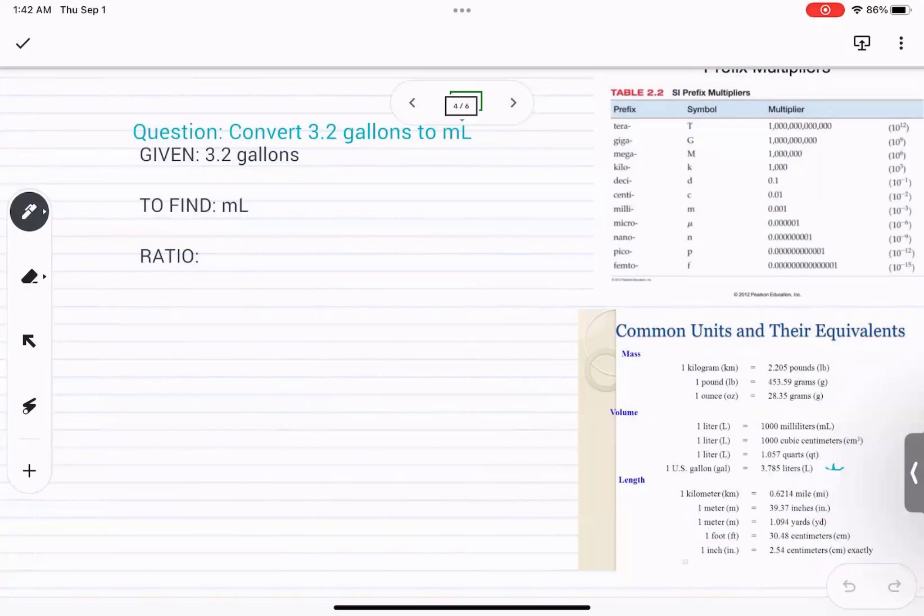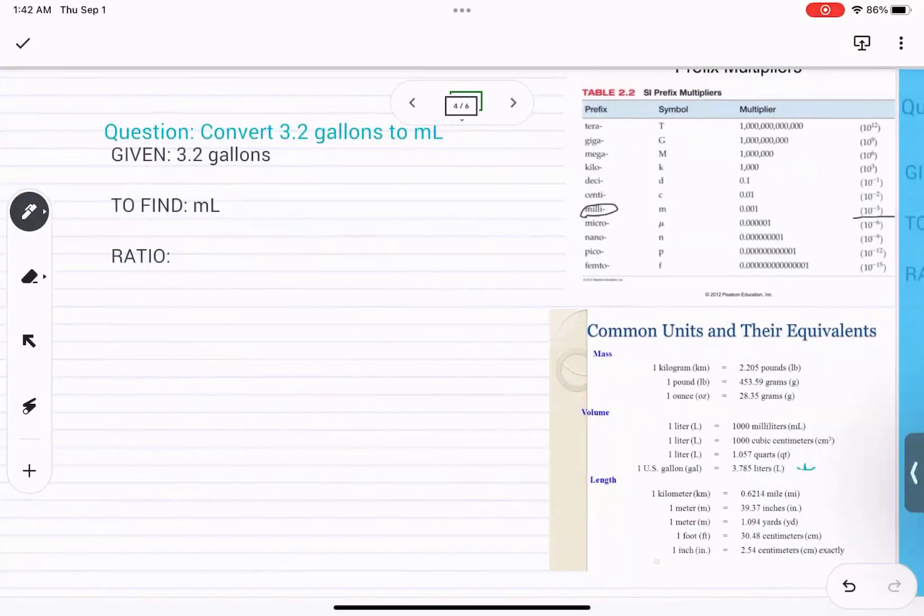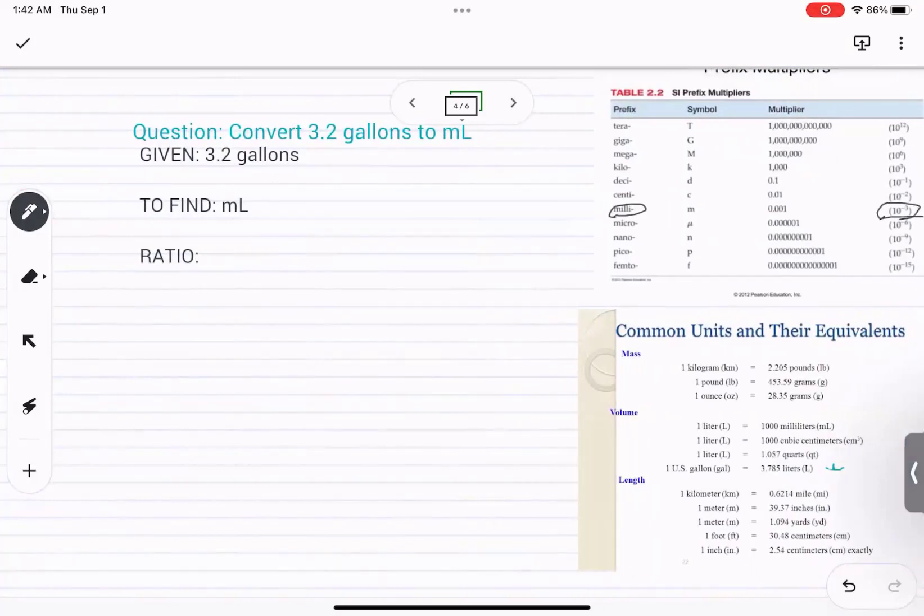So we see milliliters here. And we can see that 10 raised to negative 3 liters is 1 milliliter.